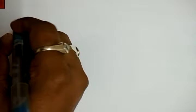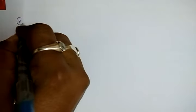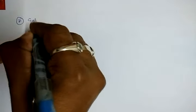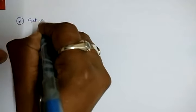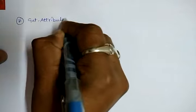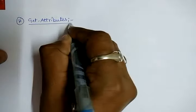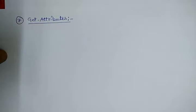Hello friends, in this video lecture we are going to discuss the next operating system service which is number 7, called Get Attributes. It is also a system call which is implemented in the operating system known as UNIX.